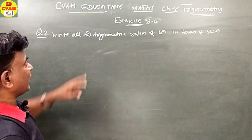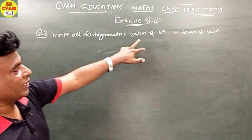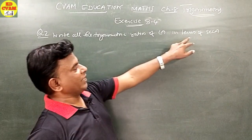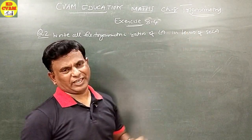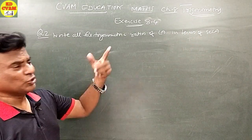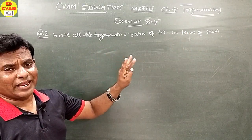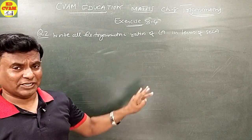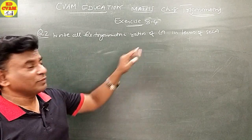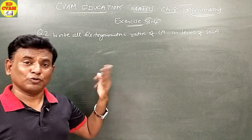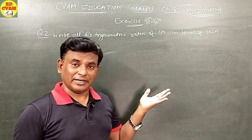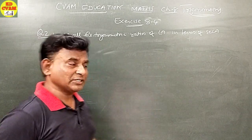Question number 2: Write all the trigonometric ratios of angle A in terms of sec A. In Question 1, specific ratios were mentioned; here we are not told which ones, so we have to write all of them ourselves.